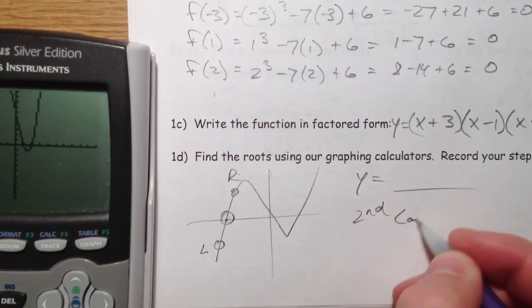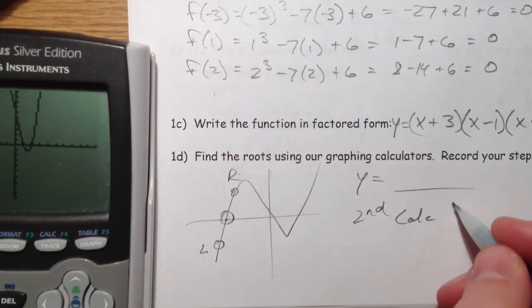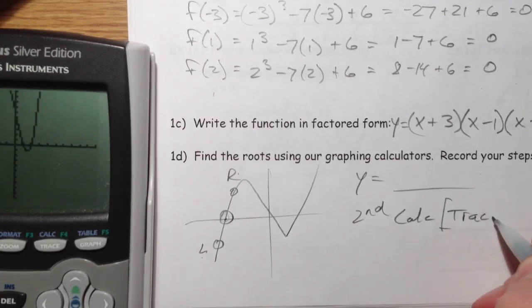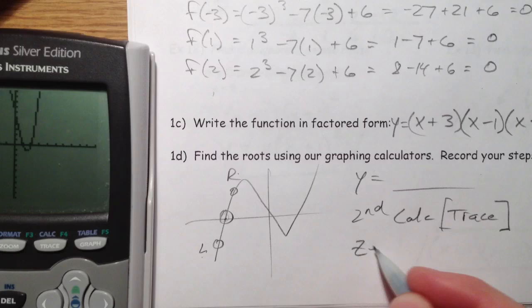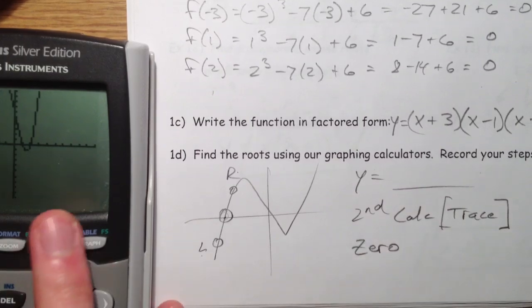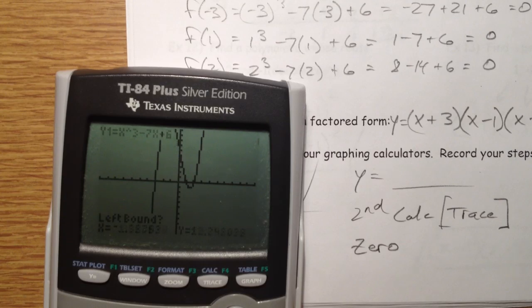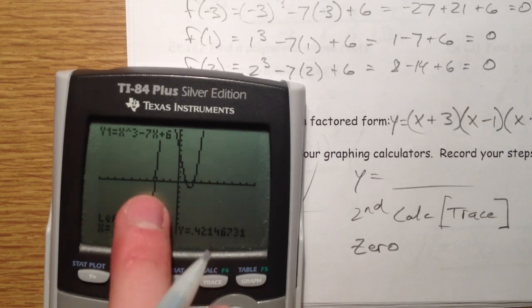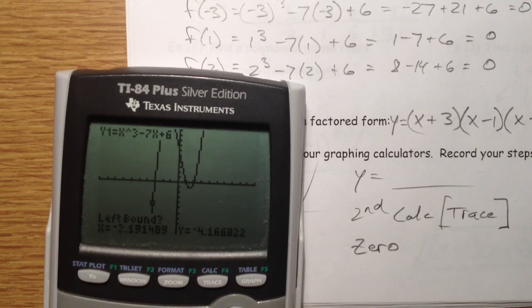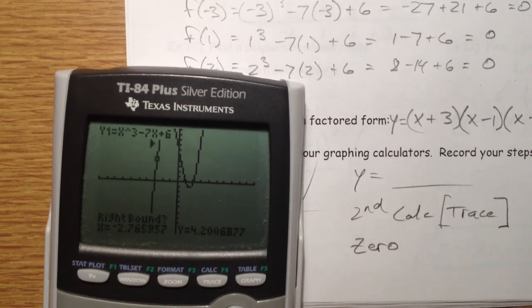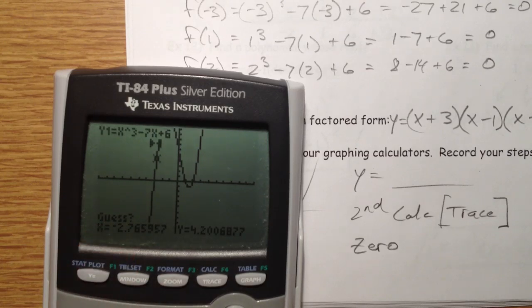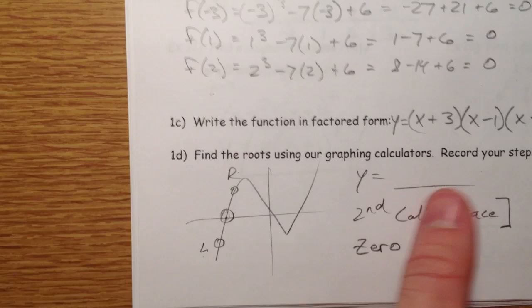Plug it into y equals. And then hit second calc, which is the trace button, and 0. You want to do left bound. So, second and the trace button and 0. Hit enter, or number 2. And I'm going to find the one off to the left here. This is where it is. I'm going to tell the calculator, look to the left. Hit enter. Look to the right. Hit enter. And then it says guess, you can just hit enter again. And so, we get negative 3, 0. You can also find the other ones that way as well. This will be a great method to check our answers with.